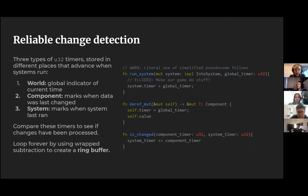The solution here is honestly fairly straightforward once you see it, but getting there is challenging. The way this works is that we have three timers. Each of them is just a simple U32, and we store them in three different places. The first is the world's timer, which is basically just an indicator of the current time. Whenever a system is run, this timer advances.